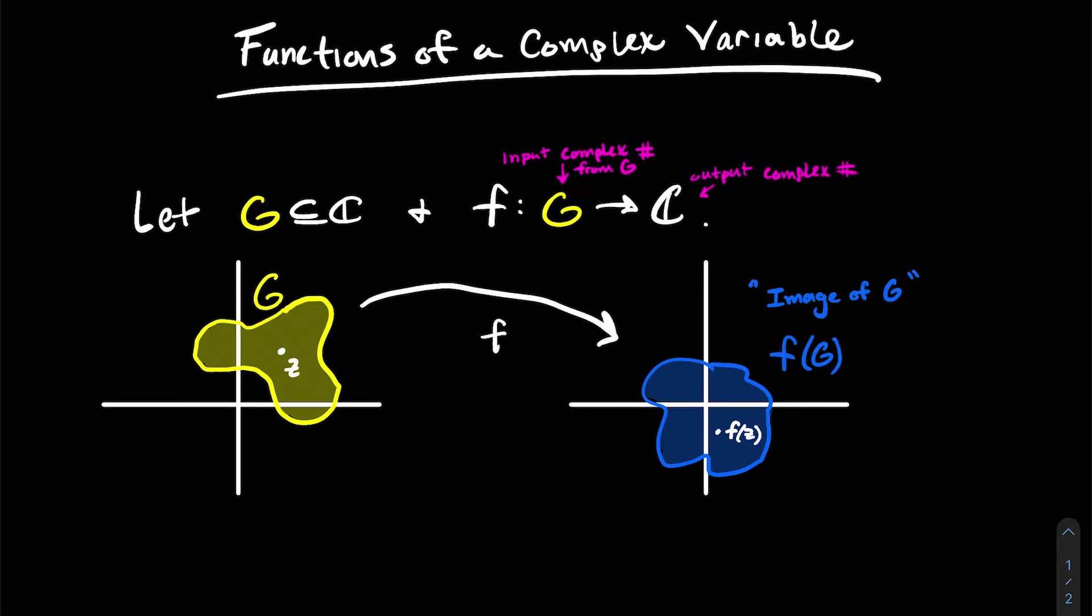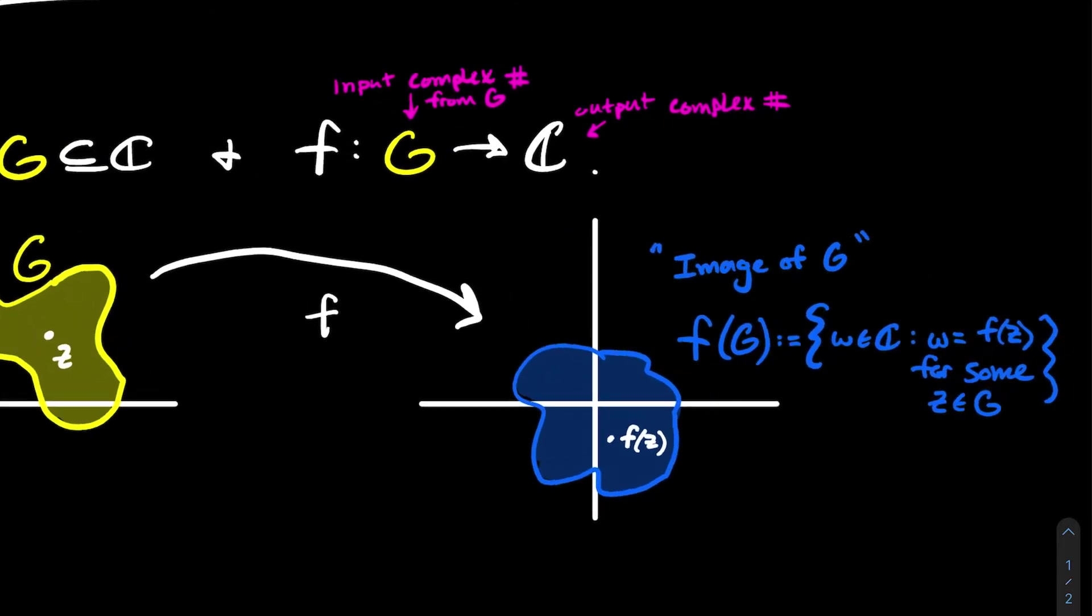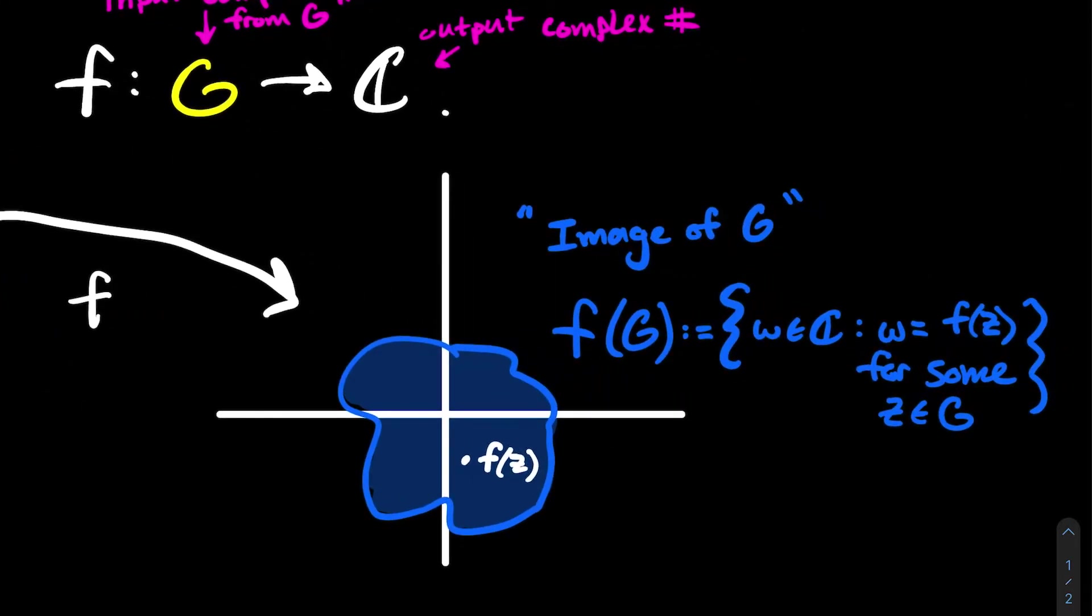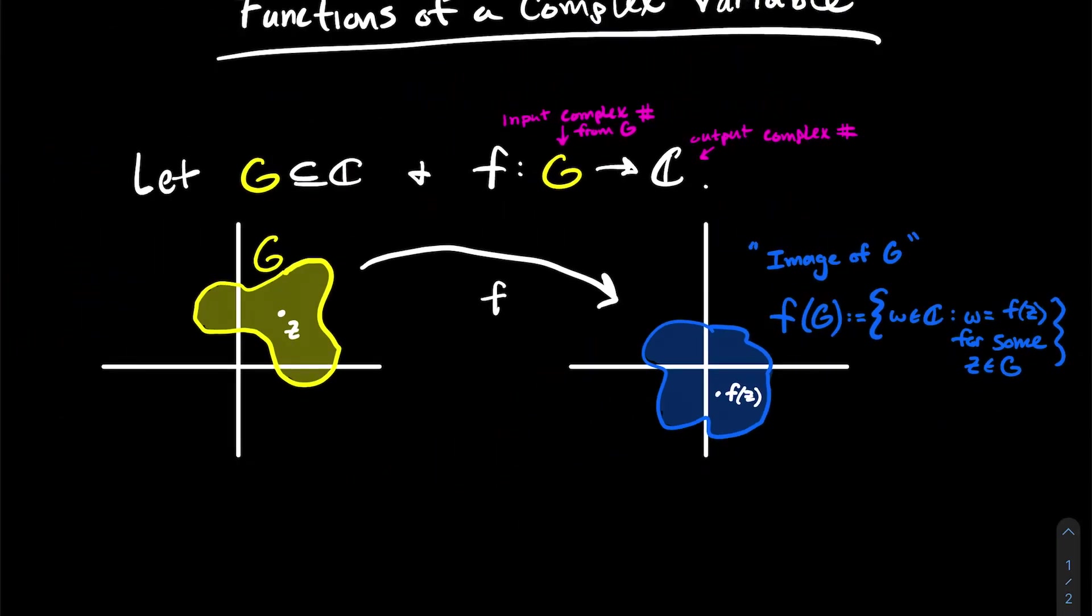And just what is that defined to be? That should be the set of all complex numbers w such that w equals f of z for some z in G. In other words it's all complex numbers that are outputs of f. That's how I want you to think about that. So that is what the image of G will be.